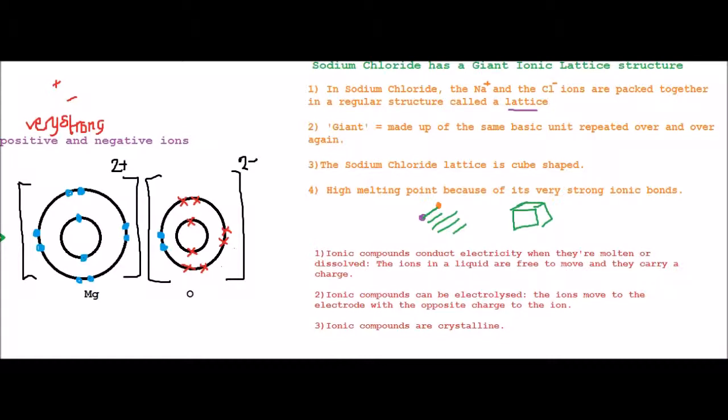The second point is that ionic compounds can be electrolyzed, which means split up by electricity, and the ions move to the electrode with the opposite charge to the ions, so the positive ions will move to the negative electrode and vice versa.